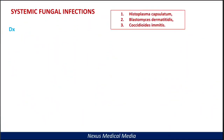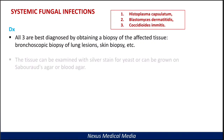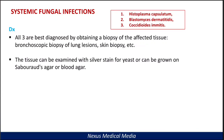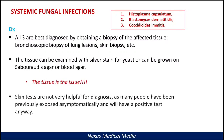In general, how do you diagnose these three bugs? All three are best diagnosed by obtaining a biopsy of the infected tissue — remember, tissue. You can do a bronchoscopic biopsy of lung lesions, skin biopsy, etc. The tissue can be examined with silver stain for yeast or grown on Sabouraud agar or blood agar. Just remember: tissue is the issue. Skin tests are not very helpful for diagnosis, as many people have been previously exposed asymptomatically and will have a positive test anyway.